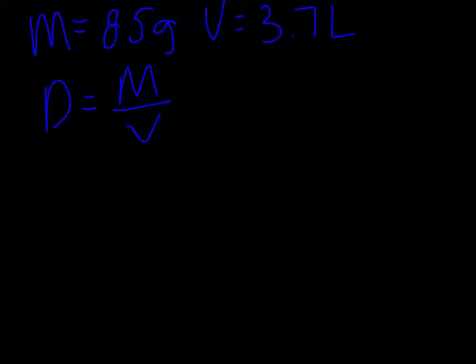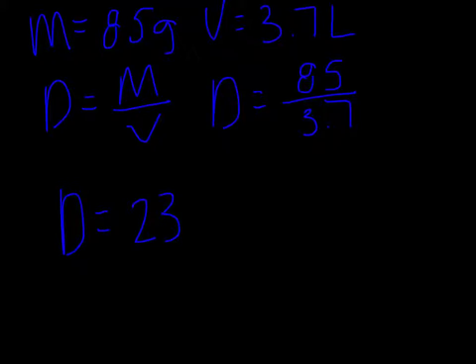We have mass and volume so we're going to plug those numbers in. d equals 85 over 3.7. When you solve that you get an answer of 23 grams per liter. And we need two sig figs because the givens have two sig figs so that's example one.